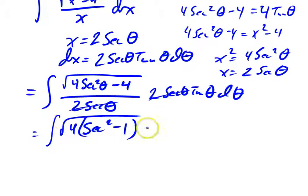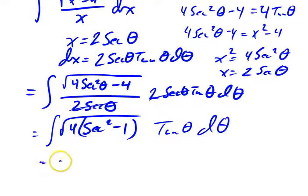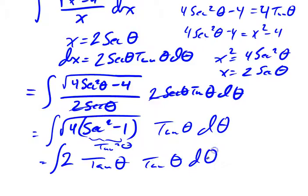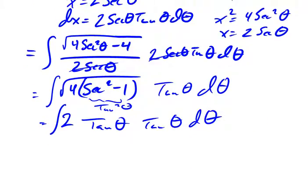So I don't have a denominator anymore. I just have a tangent theta sitting out here, d theta. The square root of 4 is 2, and the square root of secant squared theta minus 1 is tangent squared theta, so when I take the square root that's just tangent theta. And then there's another tangent theta right here. So what I end up with is 2 times the integral of tangent squared theta d theta.